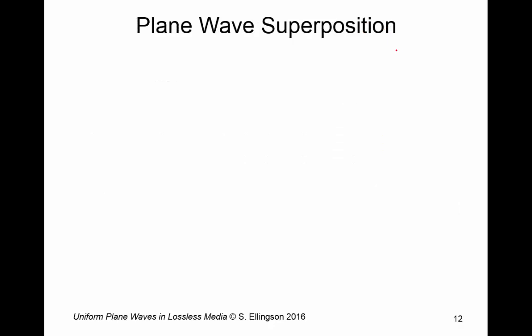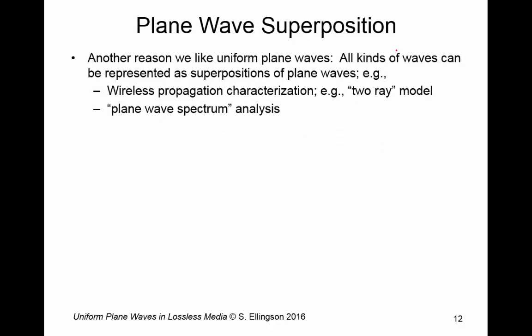There's another reason why we might consider or why we frequently consider uniform plane waves. It has to do with superposition. Lots of waves that we encounter in practice can be described as superpositions of plane waves. So, for example, in wireless propagation characterization, we have this thing called a two-ray model, where, for example, maybe we have an antenna and then we have another antenna some distance away, and even though the first antenna generates a spherical wave in principle, because of the local planar approximation, it looks like a plane wave by the time it gets to the source. And similarly, we might have a ground bounce component where the same thing happens. So what the distance end ends up seeing is, to an excellent approximation, is two plane waves.